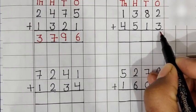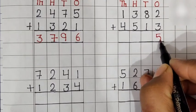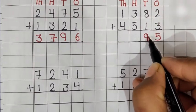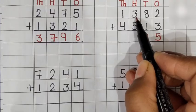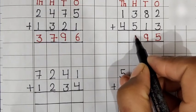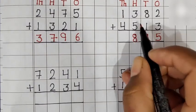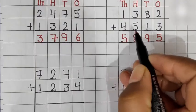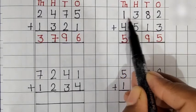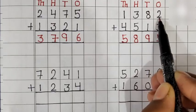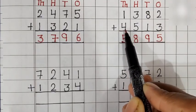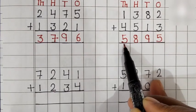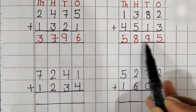2 plus 3 is equal to 5. 8 plus 1 is equal to 9. 3 plus 5 is equal to 8. And 1 plus 4 is equal to 5. So, 1,382 plus 4,513 is equal to 5,895.